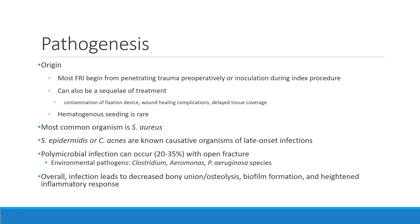In terms of pathogenesis, most FRIs begin from penetrating trauma pre-operatively or via inoculation and contamination during the initial surgery. FRIs can also be a sequelae of treatment, for example contamination on the fixation device, wound healing complications, or delayed soft tissue coverage. Typically, hematogenous seeding is considered rare. The most common organism is Staph aureus; Staph epidermidis or C. acnes are also known causative organisms of late-onset infections. Polymicrobial infections can occur with open fractures and often include environmental pathogens such as Clostridium, Aeromonas, and Pseudomonas species.